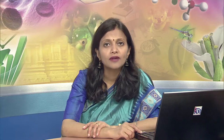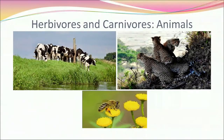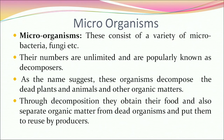While plants are the primary producers, animals are the main consumers — therefore animals are heterotrophs. There are three main functions of animals: to use organic matter made available by plants as food, to transform the food into energy, and to utilize the energy for growth and development. Microorganisms consist of a variety of micro bacteria, fungi, etc. and are popularly known as decomposers. These organisms decompose dead plants and animals and other organic matter, obtaining their food and separating organic matter from dead organisms and putting it to reuse by producers.